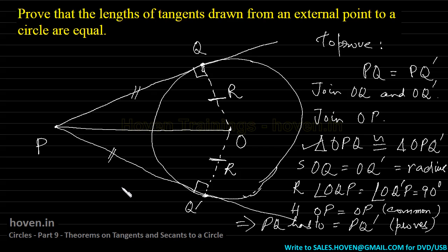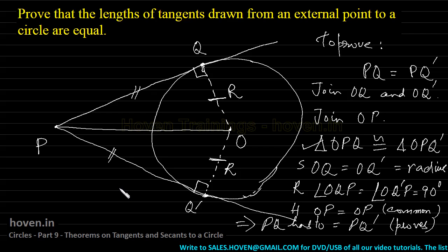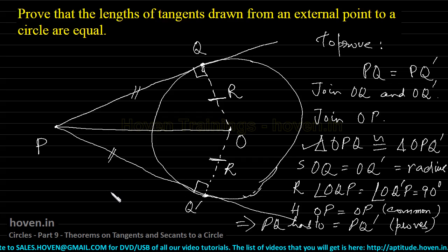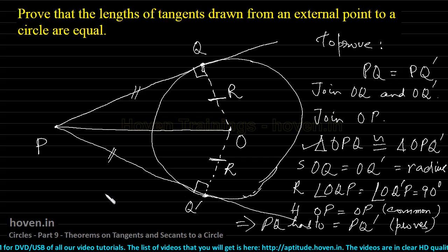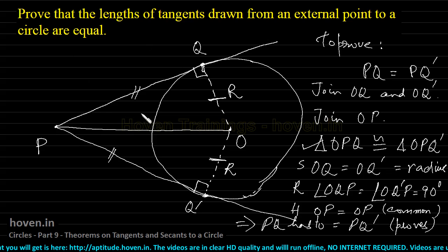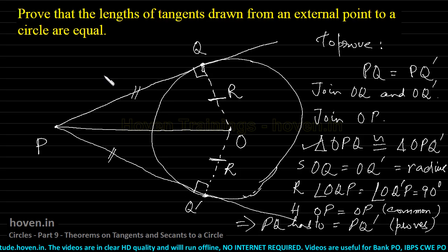We cannot underestimate the importance of congruency and similarity, which are central to Euclidean geometry. In every case, similarity or congruency was used to prove new results. You must go through all those videos on congruency and similarity. We have proved that the lengths of tangents from an external point to a circle are equal because the triangles formed are congruent. Let us move on to the next question.